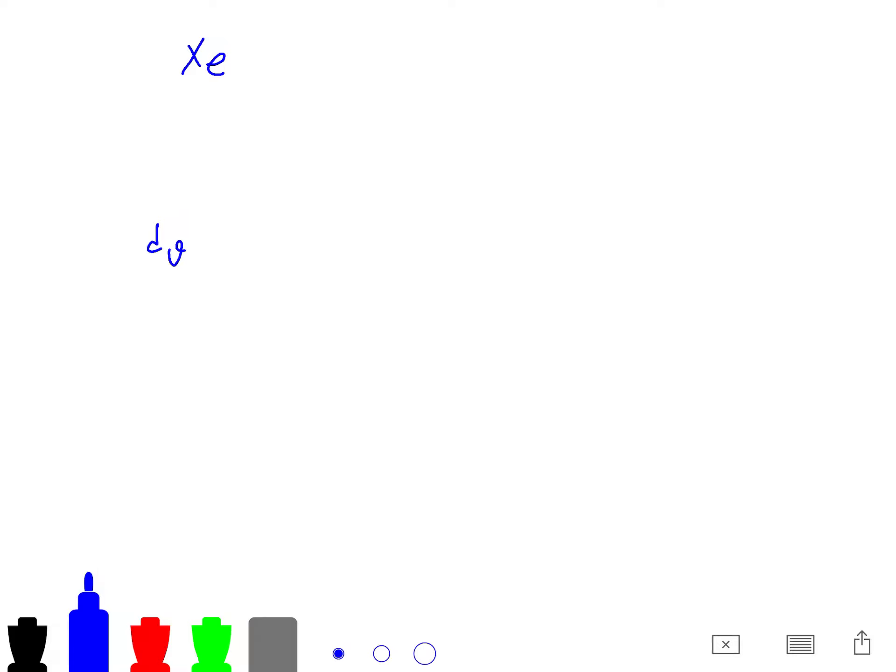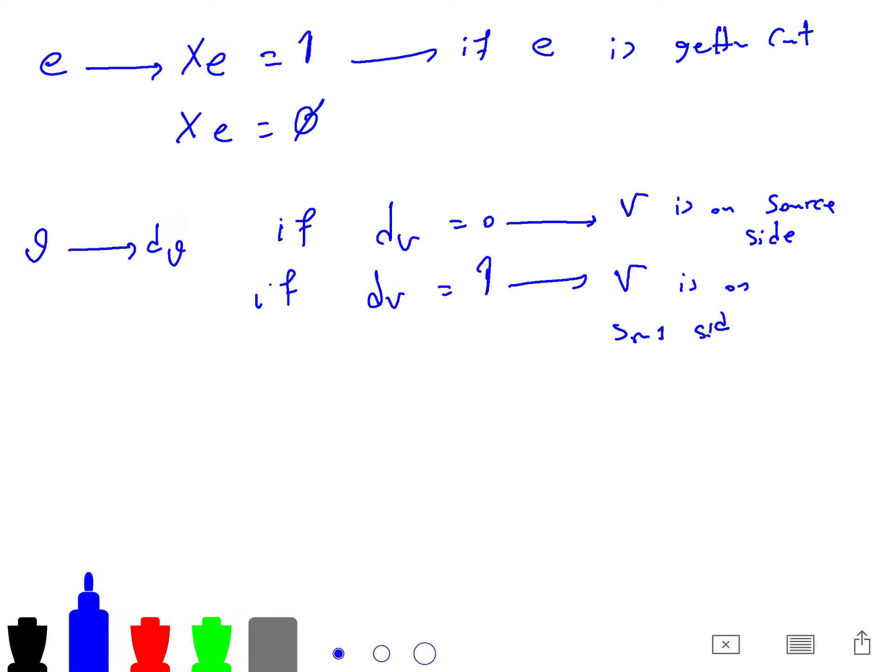For example, here, we just need to define XE variable and DV. XE variable for edges. So for any edge, we define variable XE. For any vertex, we define variable DV. And we define it. We say that it is equal to 1 if E is getting cut. If E is not cut, we say XE is equal to 0. Same for the vertex variable. We say that if the vertex is equal to 0, it means that V is on source side. If D of V is equal to 1, we say that V is on sink side.